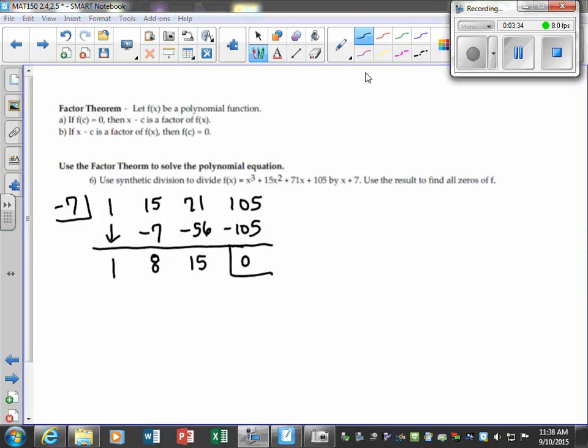With synthetic division, we work this out. We get a remainder of zero. So the conclusion to that says, obviously, x plus 7 is a factor of this because it had a remainder of zero. Now, what's left over?